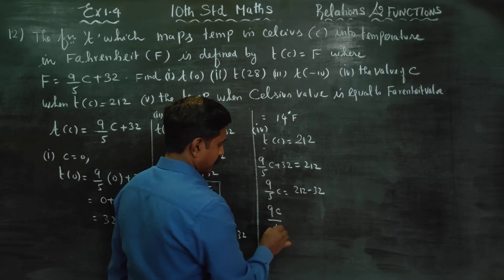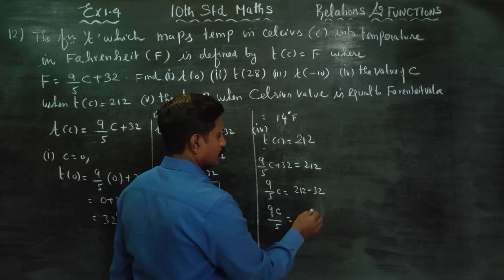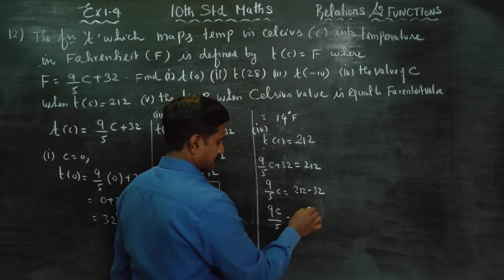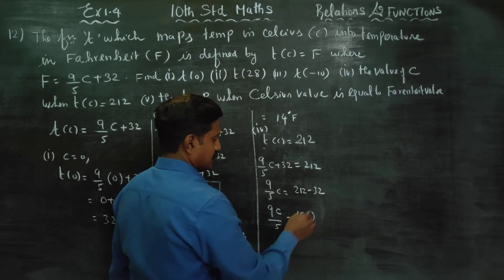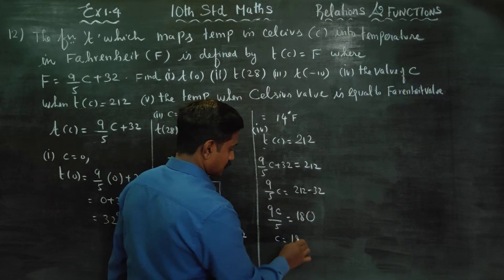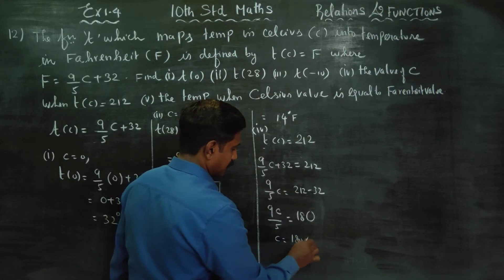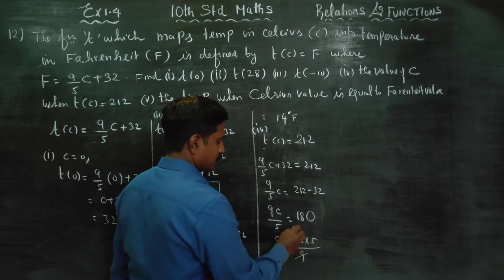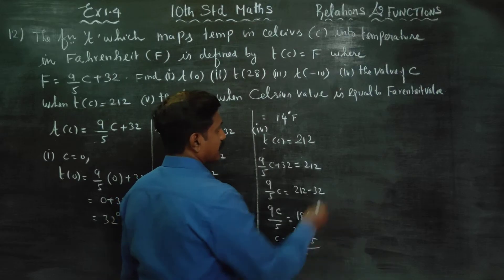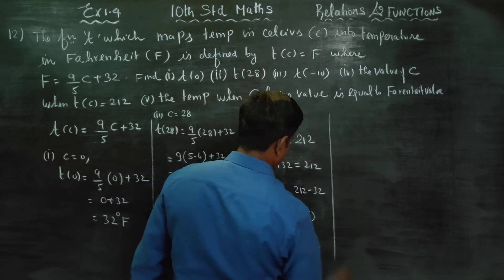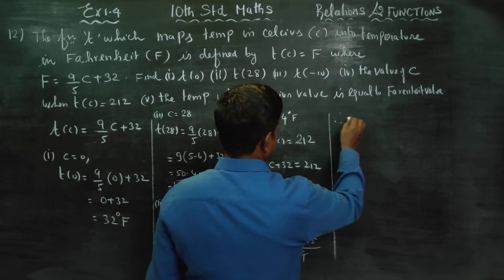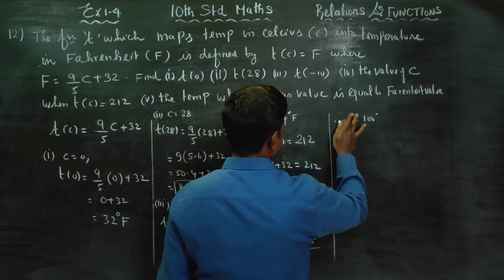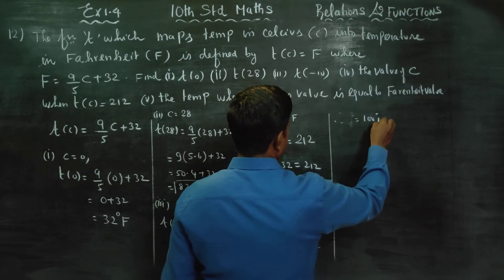9 by 5 C is equal to 180. Cross multiplying, C is equal to 180 into 5 by 9. That gives 20 into 5 is 100. Therefore C is equal to 100.